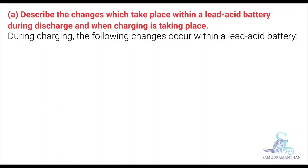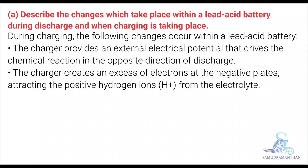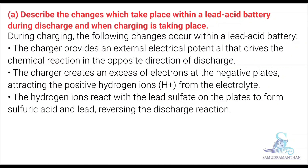Now we will discuss the charging process. During charging, the following changes occur within a lead acid battery. The charger provides an external electrical potential that drives the chemical reaction in the opposite direction of discharge. The charger creates an excess of electrons at the negative plates, attracting the positive hydrogen ions from the electrolyte. The hydrogen ions react with the lead sulphate on the plates to form sulphuric acid and lead, reversing the discharge reaction.